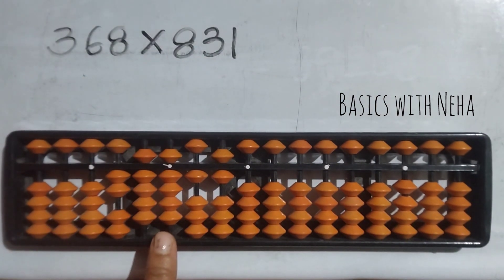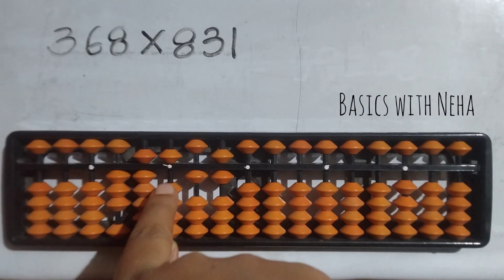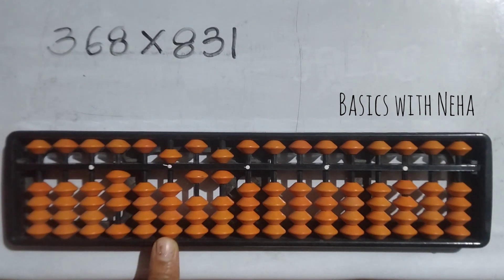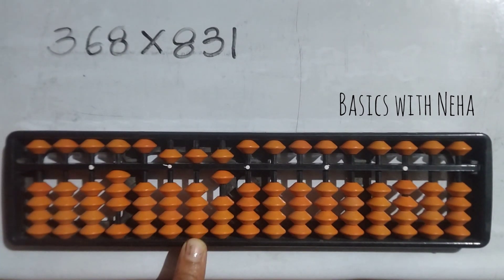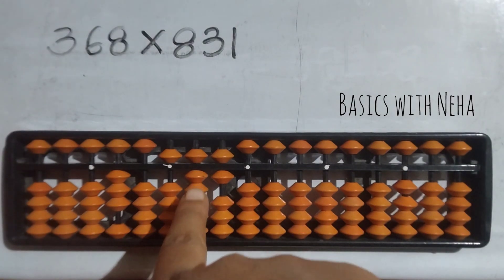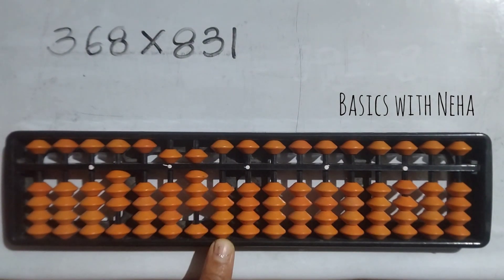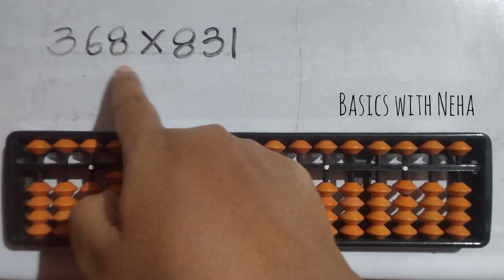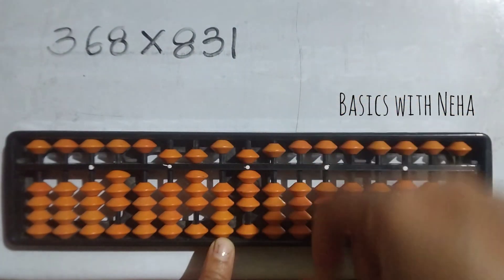Now 8 into 831 — start from the fourth rod. 8 eights are 64 — to place six here it is plus ten minus four, plus ten. I cannot do it here, so plus ten minus four, remove everything from the jump rod — sixty. Now place four — plus five minus one. 8 threes are 24 — two, and to place four it is plus ten minus six. 8 ones are 8 — it will be zero eight. So the answer is 305808.